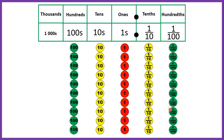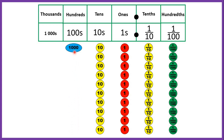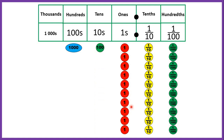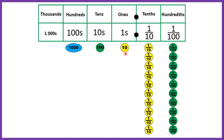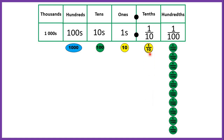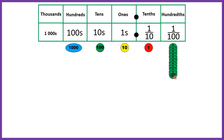We can also go the other way. Ten tens is the same as one hundred. Ten ones is the same as one ten, and we carry on in the same way going into decimal place values. So if we have ten tenths that's the same as having one one, and if we have ten hundredths that's the same as having one tenth.